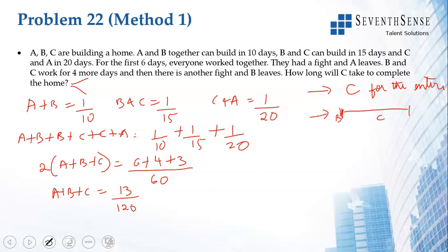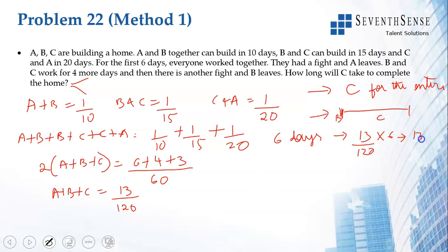In the first 6 days, all three are working together. In one day they do 13/120 of the work. In 6 days they will do 13/120 × 6 = 13/20th of the work.